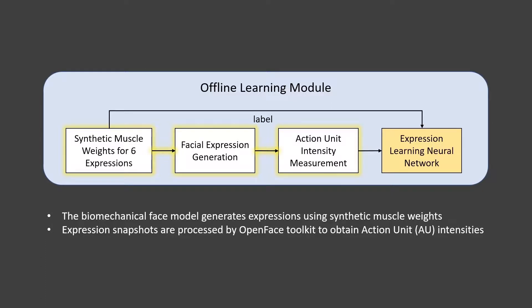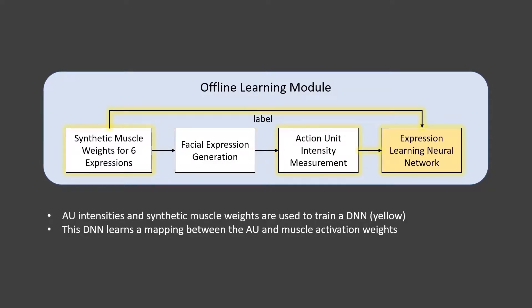The offline learning module is used to learn muscle activations in the biomechanical model given measured action units, or AUs. This process requires pre-training. We use the biomechanical face model to generate expressions based on synthetic muscle weights, then use the OpenFace computer vision toolkit to process snapshots of these expressions to obtain AU intensities. After generating many pairs of AU intensities and corresponding synthetic muscle weights, we use them to train a deep neural network labeled in yellow. This deep neural network learns the mapping between the AUs and muscle activation weights.